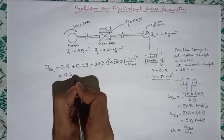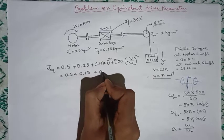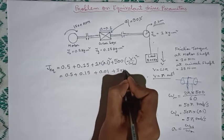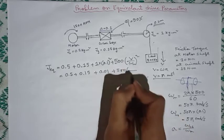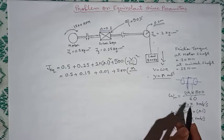If we substitute all this value here, we will finally get that 0.5 plus 0.15 plus 0.01 plus 500 into v is pi and omega m is 50 pi. This is the speed of this motor.